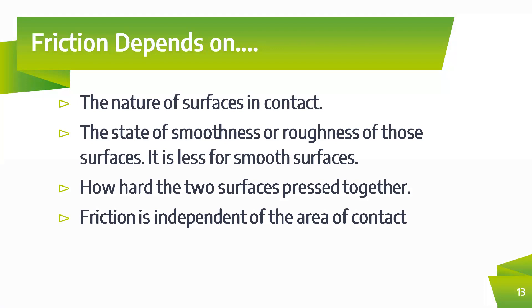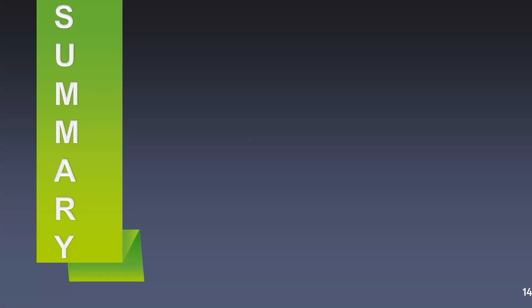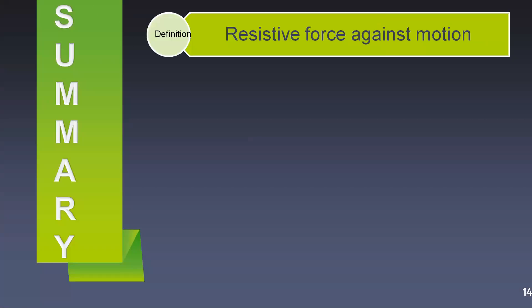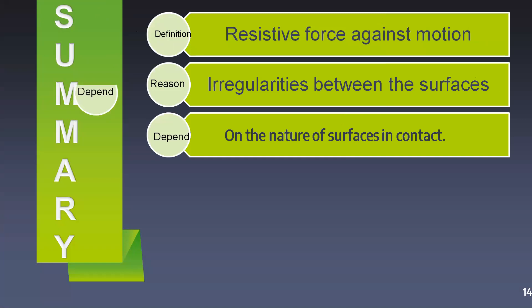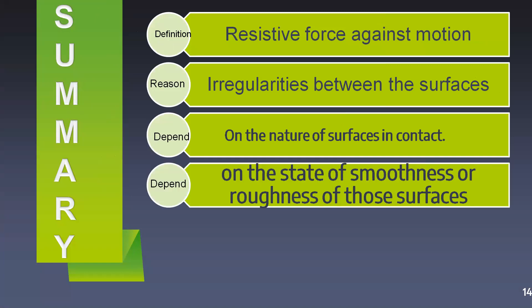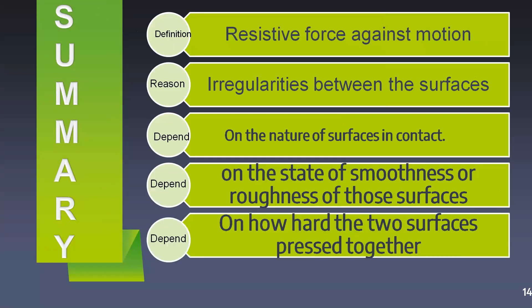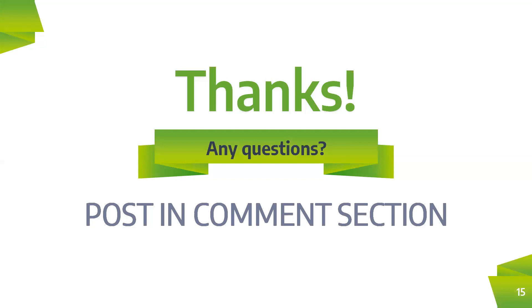I hope today's topics are very clear to all of you. Let's have a quick recap. The definition of friction is the resistive force against motion. The reason is the interlocking of irregularities between the surfaces. Friction depends on the nature of the surfaces, the state of smoothness or roughness, and how hard the two surfaces are pressed together. If you have any doubts related to this topic, please post in the comment section so that I can address them in a forthcoming video.